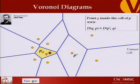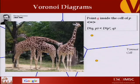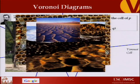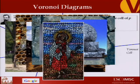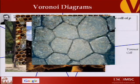Voronoi diagrams have been used since the 1960s, named after Georgy Voronoi. They're not limited to geometry and mathematics — they have been seen everywhere in nature. They are a source of inspiration for encoding the concept of closeness. The points in many natural examples are the centers — nucleation sites where a phase transformation occurred, with a force pushing things outward.